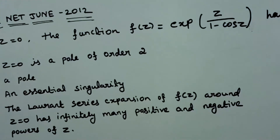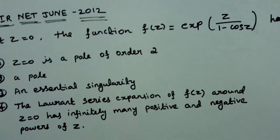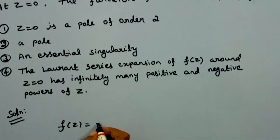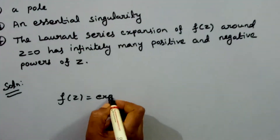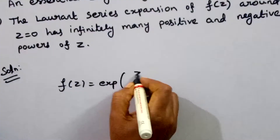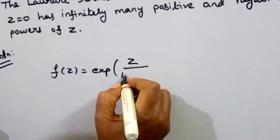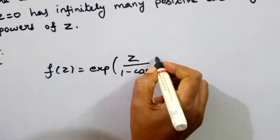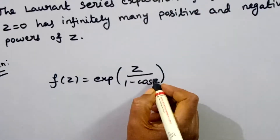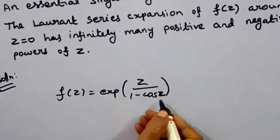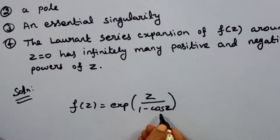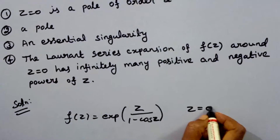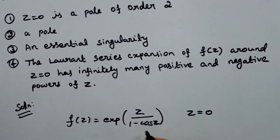Now we have a solution. We have f of z equal to exponential of z divided by 1 minus cos z. This is a singularity — the singular point we call z equal to 0. We need to determine the nature of the point z equal to 0.